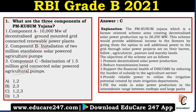The options are: A) 1 and 2, B) 2 and 3, C) 1, 2 and 3, or D) 1 and 3. The answer is C — all three are components. You need to know all the figures. Additionally, the scheme aims at creating a decentralized solar power production capacity of 28,250 megawatts overall, with these three components forming part of the scheme.